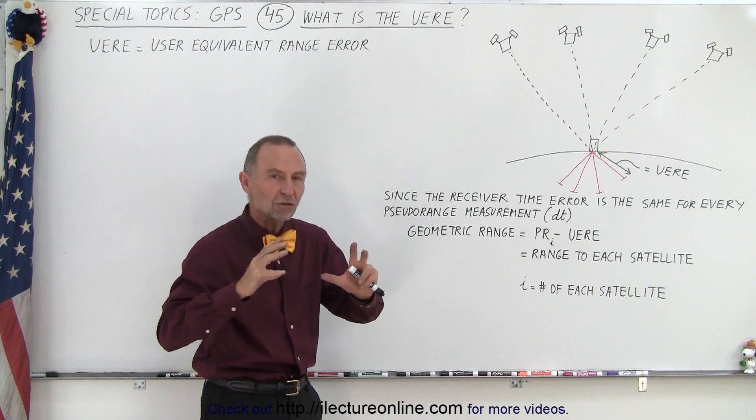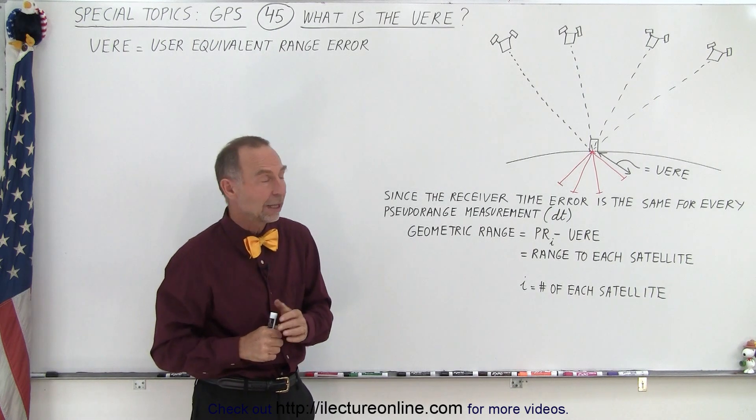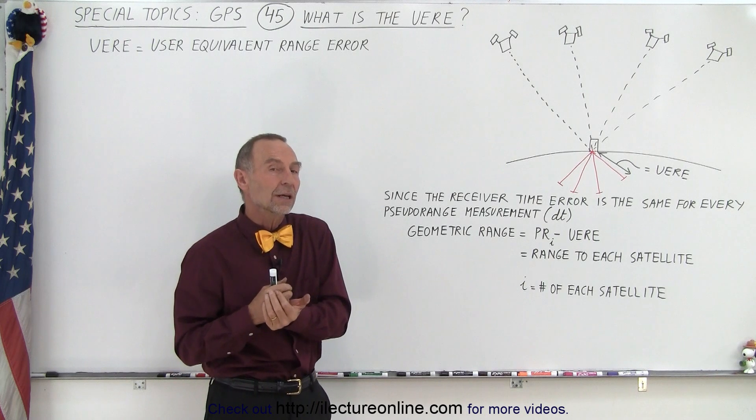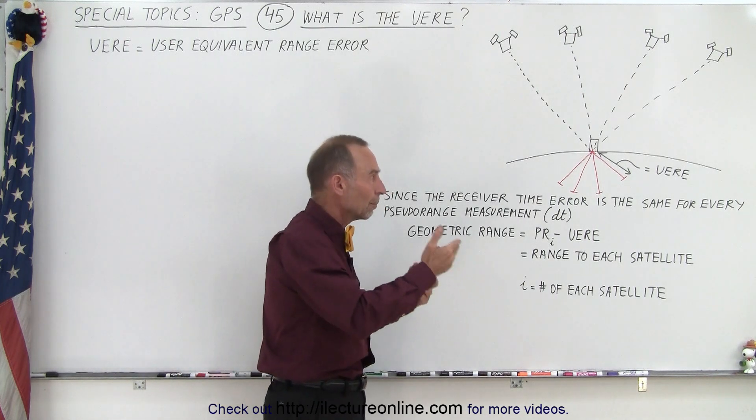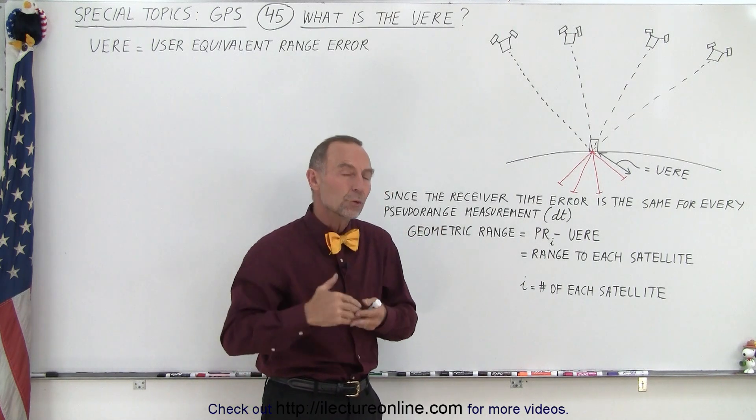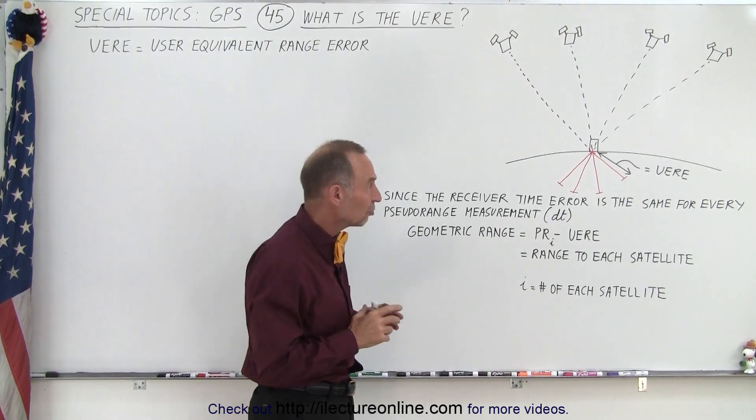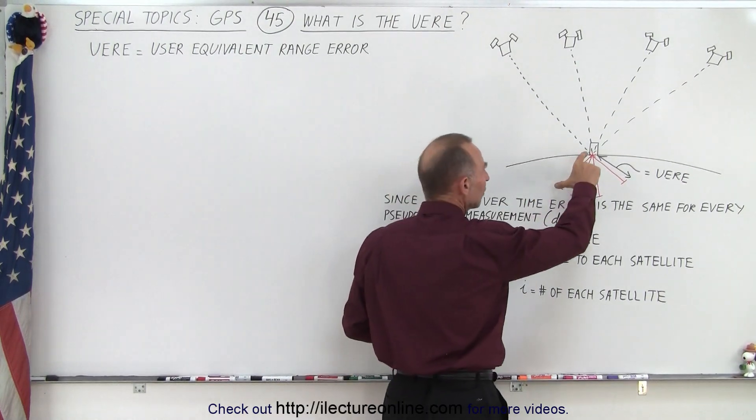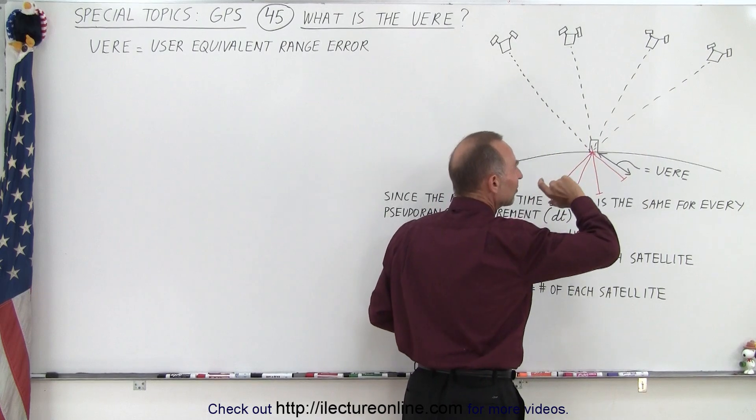But the change, the bias of the receiver clock can be quite large, and so we calculate what that is, and then we also make adjustments for all the other components in the error to find the true geometric range, and then we can assume that that is going to be the same for every satellite.